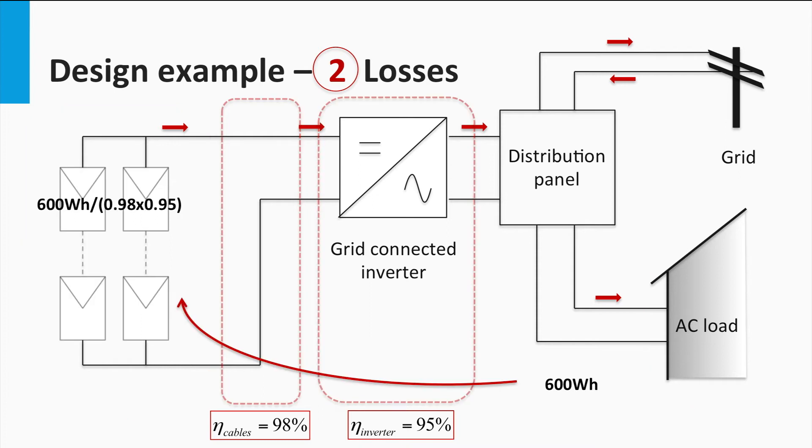Given the system component efficiency, we can then calculate the equivalent energy required from the PV panels as shown. This is basically nothing but the transposition of the energy before all these losses occur. Therefore, the total energy requirement for the PV array is 644.5 Wh.